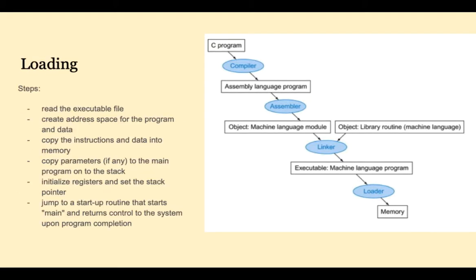The loader is responsible for loading the executable file into memory. It has to find address space for it, copy it into memory, copy any parameters to the main program onto the stack, initialize registers, and set the stack pointer. Then it will jump to a startup routine that starts main and monitors it, finally returning control to the system upon program completion.